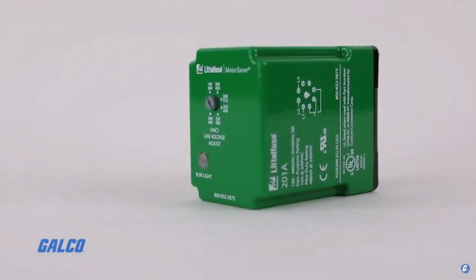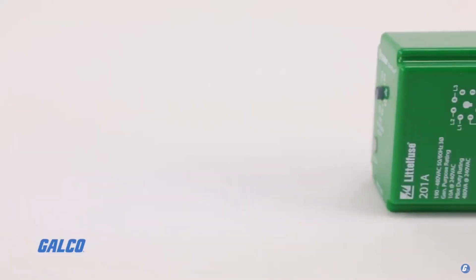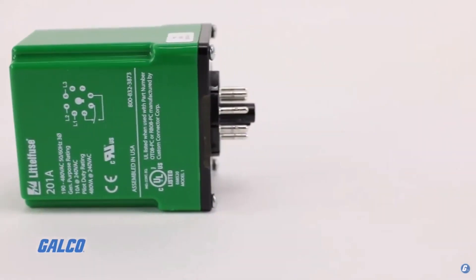The 201A monitor can recognize and distinguish between low-voltage conditions, phase loss, phase reversal, and voltage unbalance. When a harmful power event is detected, the voltage monitor's output relay is deactivated after trip delay.